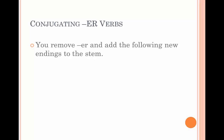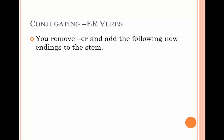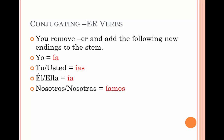Conjugating ER verbs. As with AR verbs, all we have to do is remove the ending ER and then add these following ones to the stem. For yo we add ía, for tú o usted we add ías, for él o ella we add ía, for nosotros o nosotras is íamos, for vosotras, vosotros o ustedes is íais, and for ellos and ellas is ían.